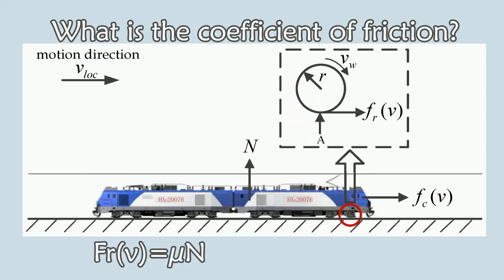Friction equals mu times N, where N is the weight of the train. Mu is the rolling friction coefficient of the wheel.